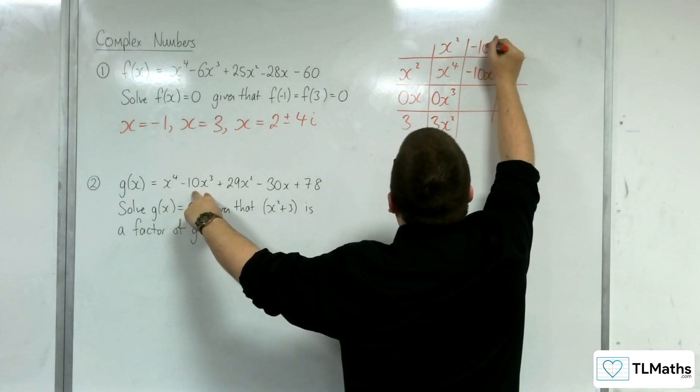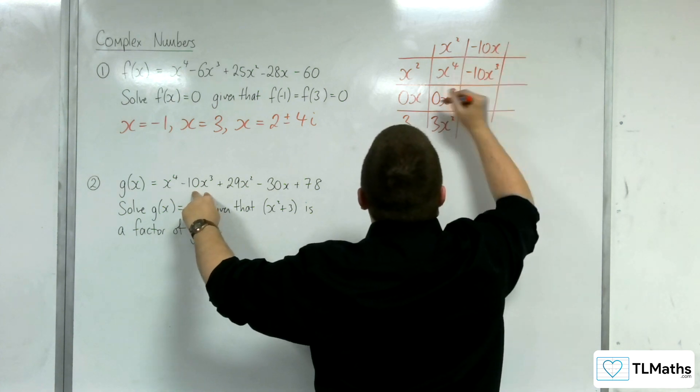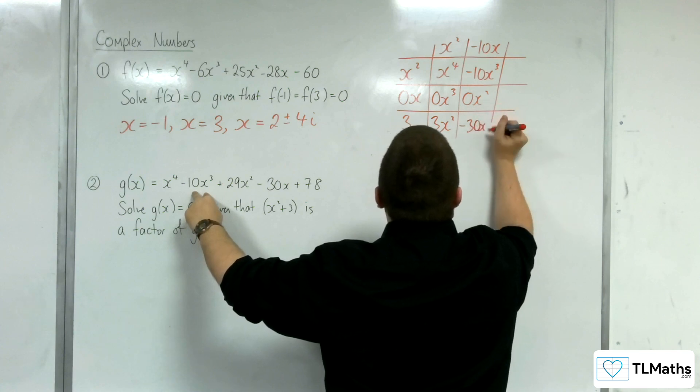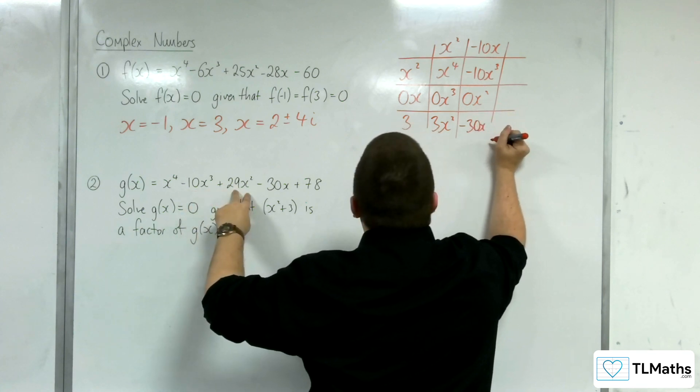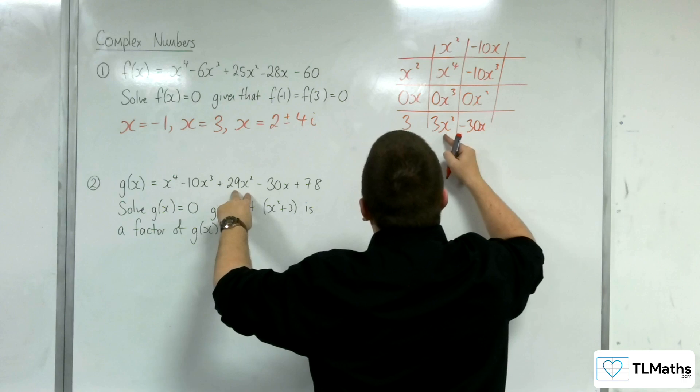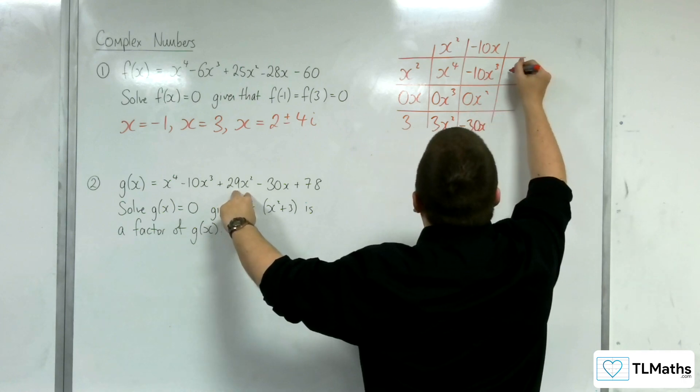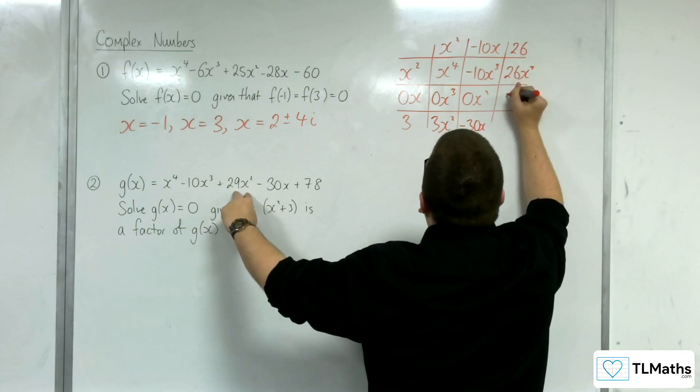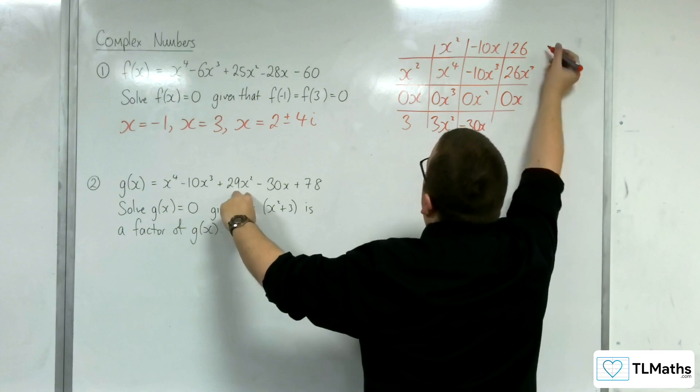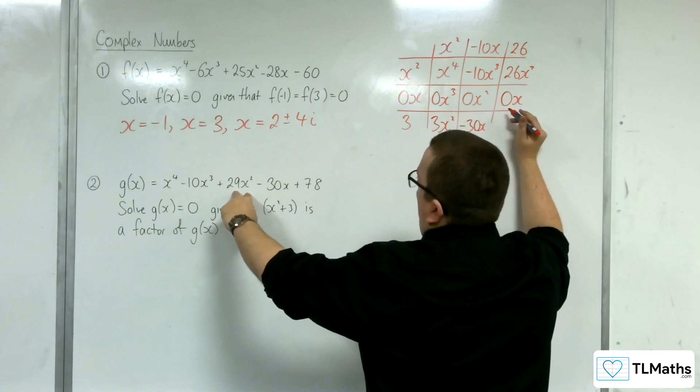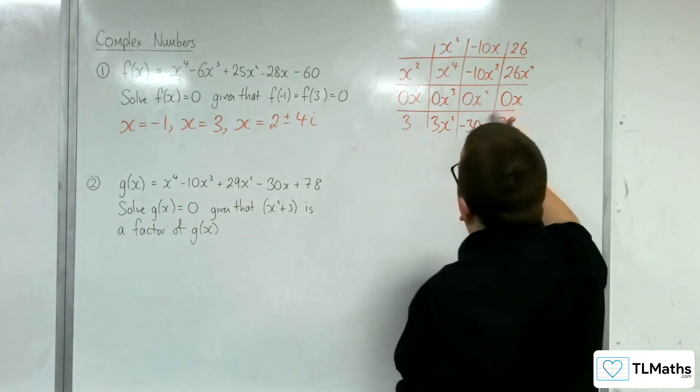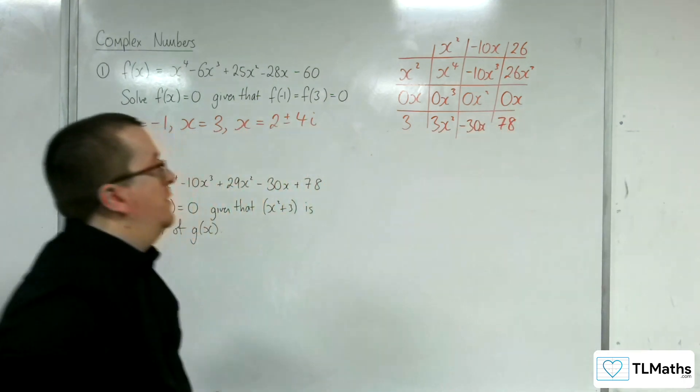Now I need 29x². I've currently got 3x², so I need 26x² more. So this would have to be 26. That would have to be 0x. And then 26 times 3 will get me the 78. So I've got the -30x, I've got the 78, so all's good there.